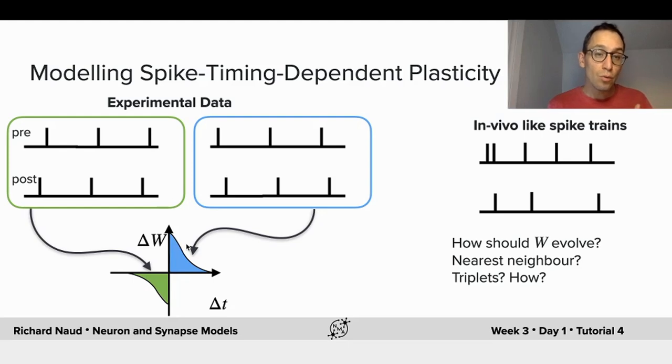However, if we're trying to use this feature in simulations and see what it does, our simulations will not take the form of these very regular spikes. Instead, the spike timing will be rather random, such as we see in vivo when we look at spike trains. So how should this synaptic strength, W, evolve? How should we change this W? Should we actually look at the nearest neighbors and compute some type of relative timing? Or should we actually take triplet interaction? How should we go about doing this?